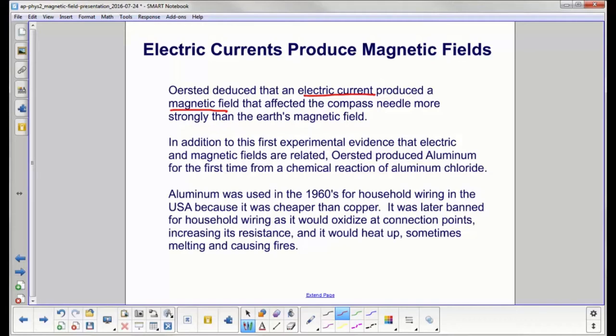As an aside, in addition to this first experimental evidence that electric and magnetic fields are related, Ørsted produced aluminum for the first time from aluminum chloride. In the 1960s, builders started using aluminum for household wiring because it was cheaper than copper. However, that's banned for household wiring now because it would oxidize at connection points, which would increase resistance, heat up, sometimes melting and causing house fires. Wiring inside houses is now all done with copper.